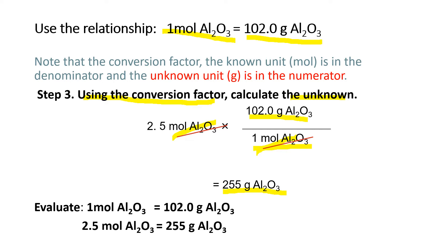Let us evaluate if it makes sense. 1 mole of aluminum oxide weighs 102 grams. What about 2.5 moles? The mass is 255 grams. It makes sense because if 1 mole is 102 grams, then 2.5 moles must be more than twice the mass of 1 mole — which is correct: 255 grams of aluminum oxide.